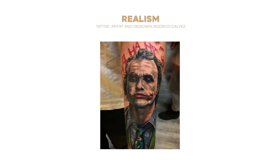Realism is easier to describe. These are tattoos that look similar to reality, independently of whether what they're representing is real or not. This style's main characteristic is that there are hardly any lines, because almost all of the work depends on shadows. They can be done in black or in color. Within this style we can find the watercolor tattoo, which is very popular. I'll put it in the same category because, as I said, they hardly use lines — everything is based on color gradients. Realism has the inconvenience that, as we use very fine lines with so much detail, we lose the tattoo faster than with the traditional ones.